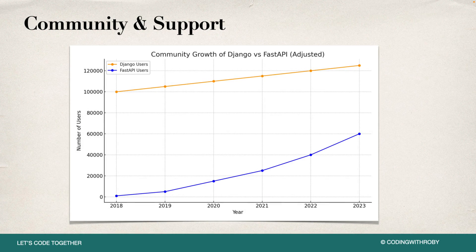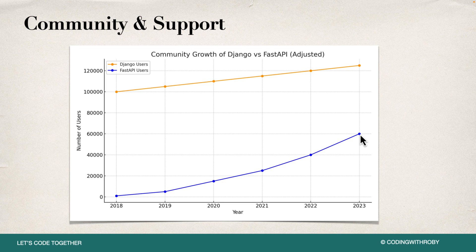Looking at overall growth: in 2018 when FastAPI was created it had essentially zero users while Django was already at 100,000. This data came from GitHub and some blogs — it may not be 100% accurate but felt accurate enough to share. In 2019 and 2020 FastAPI started picking up steam, but it really shot ahead in 2021, crossing 20,000 users and gaining serious momentum. 2021 to 2022 and 2022 to 2023 were huge growth periods, and 2024 has been going like crazy. Django started at 100,000 and is slowly creeping up, just not at FastAPI's rapid growth rate.